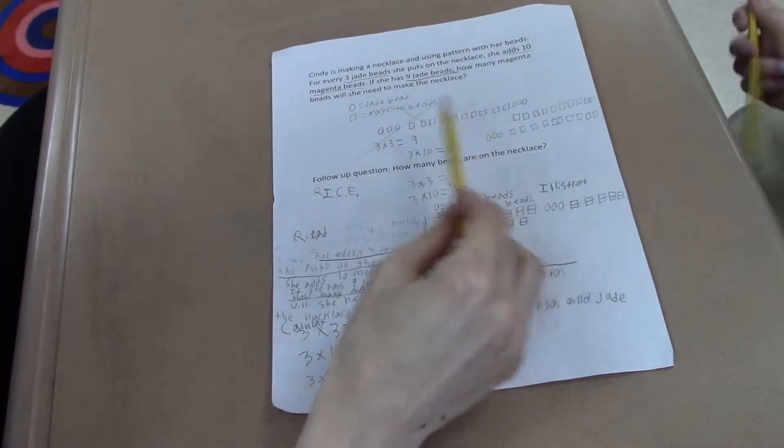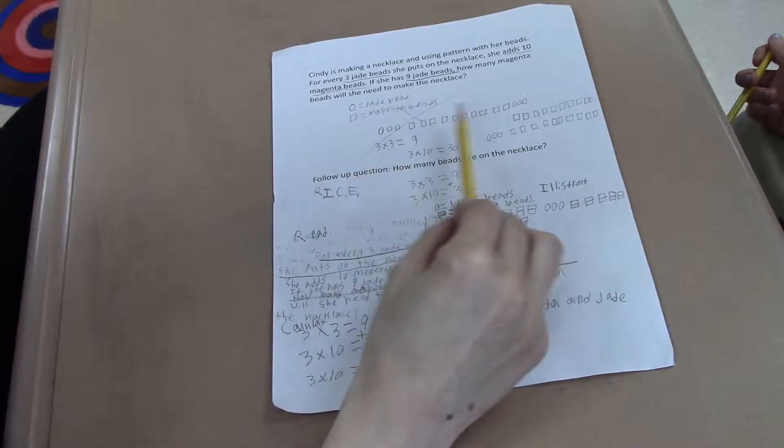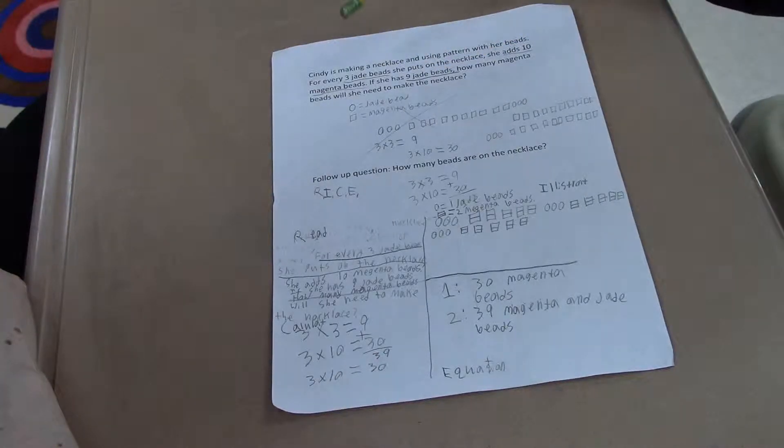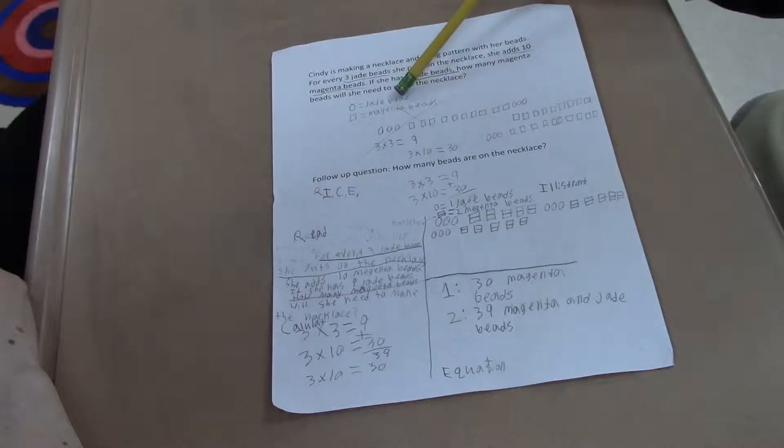Okay, can you explain how you started making the pattern? What made you make the decision to put circles and the squares and the number of circles and squares you used? I made a key that says that one circle equals one jade bead. And the square equals magenta beads.